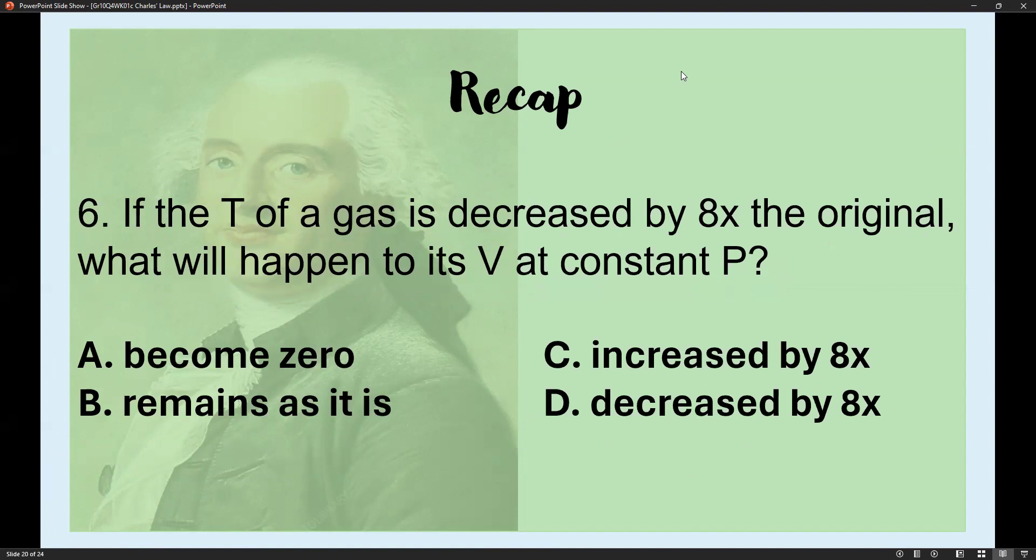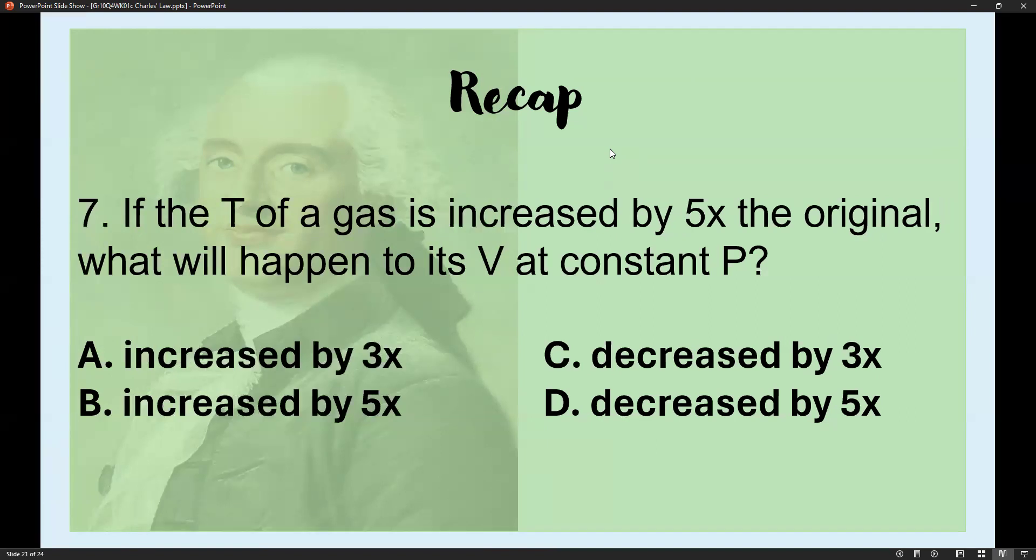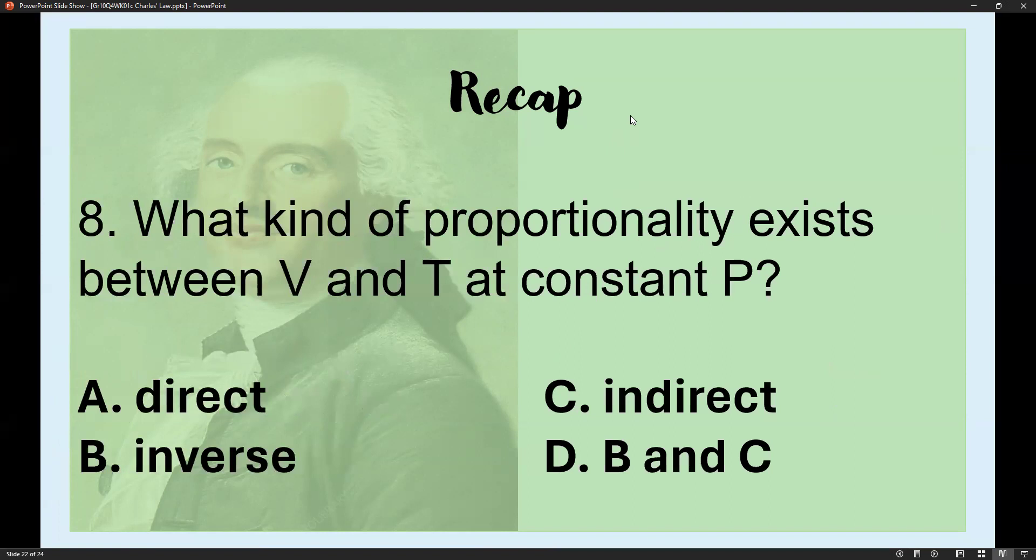Number six: If temperature of a gas is decreased by eight times the original, what happens to its volume at constant pressure? If it cooled by eight times the original temperature, then volume will also decrease by eight times the original. Number seven: If temperature is increased by five times the original, what happens to volume? If we heated the gas five times, volume will also increase by five times the original. Number eight: What proportionality exists between volume and temperature? That's direct proportional relationship.